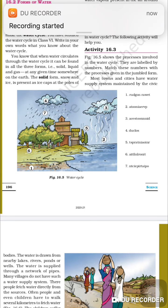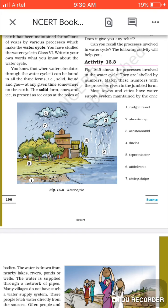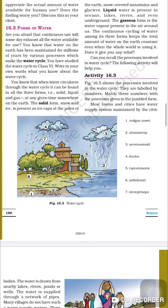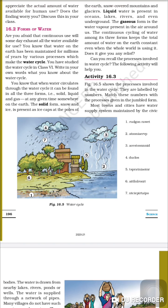Students, we will see forms of water. When water circulates through the water cycle, it can be found in all three forms: solid, liquid, and gas. At any given time, somewhere on the earth, the solid form — snow and ice — is present as ice caps at the poles of the earth.